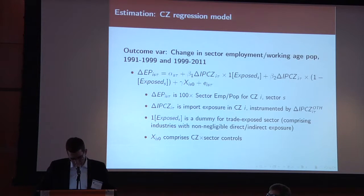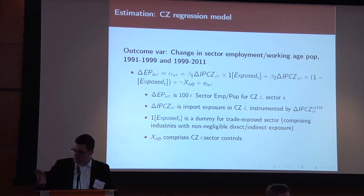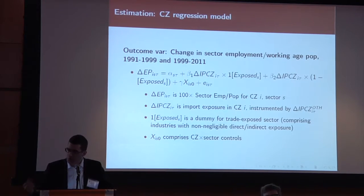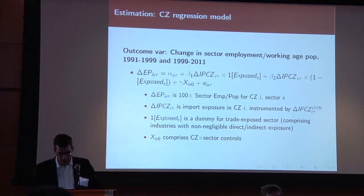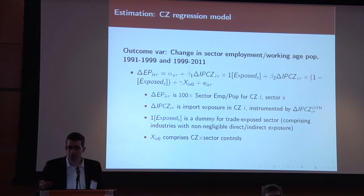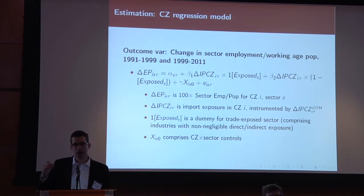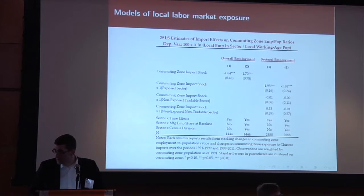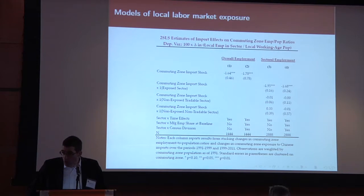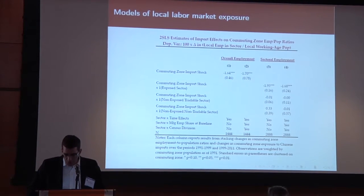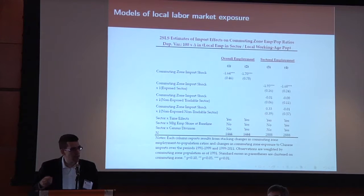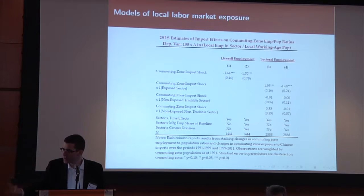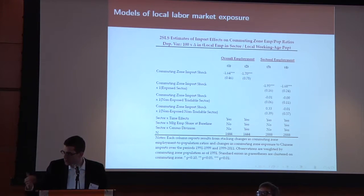We run regression models that relate the change in the employment-to-population ratio in such a local labor market to this change in local labor market import exposure. In some specifications we allow those effects to differ or disaggregate them for different types of industries. What we see is that more trade-exposed places have adverse employment responses, and that adverse employment response happens in industries with either strong direct or strong indirect industry-level exposure — like those raincoat and furniture businesses that scale down.